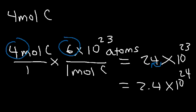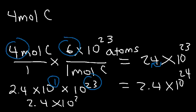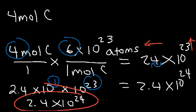Another way to see it: 24 can be viewed as 2.4 times 10, and we still have the 10 to the 23rd. Multiplying 10 to the 1 by 10 to the 23rd means adding the exponents, giving 10 to the 24. Whenever you move the decimal point one unit to the left, the exponent increases by one. So that's how many carbon atoms we have in this problem.